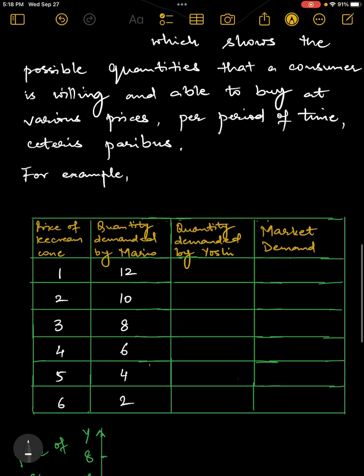Now, let's take an example to understand this concept. Let's say the left hand side of this table price of ice cream cone. When the price of ice cream cone is $1, the quantity demanded by Mario is 12 ice creams. When the price rises to $2, the quantity demanded has gone down to 10. So as the price is increasing, if you notice, the quantity demanded by Mario has gone down. This is a table schedule which is showing how much quantity of ice cream will be demanded by Mario at different possible prices.